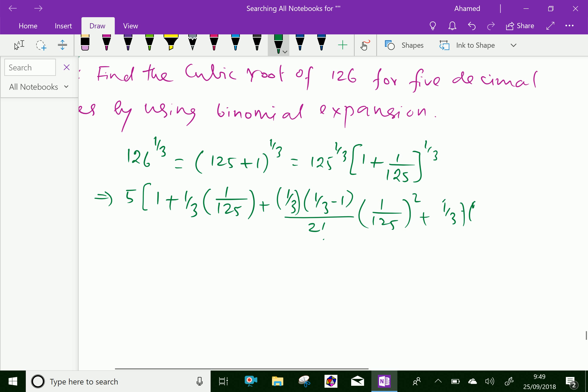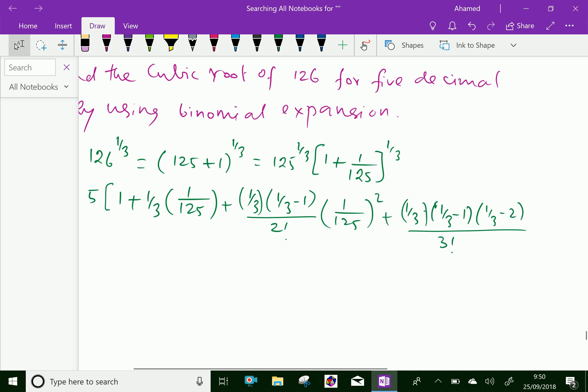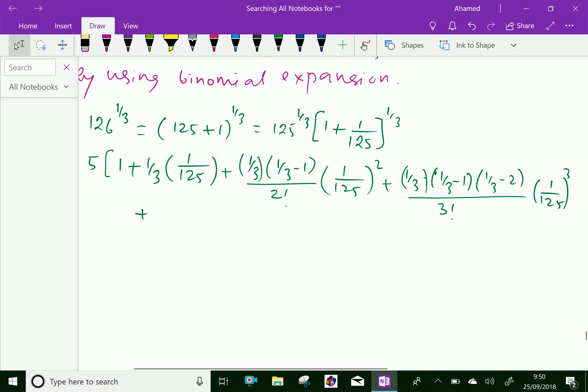Next term is (1/3)(1/3 - 1)(1/3 - 2) over 3 factorial times (1/125)^3, and (1/3)(1/3 - 1)(1/3 - 2)(1/3 - 3) over 4 factorial times (1/125)^4.